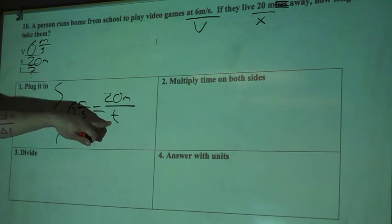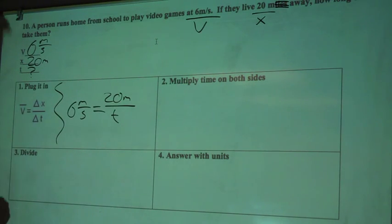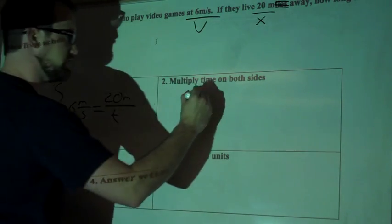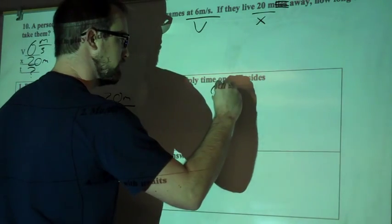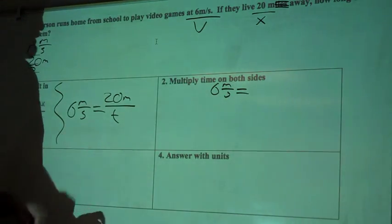So I'm going to write T down here. Since we've got the variable we're trying to find on the bottom, we need to get it up to the top. So we're going to multiply time, or T, on both sides to get to that. So we'll rewrite everything we have here over here. So we've got 6 meters per second equals 20 meters divided by T.